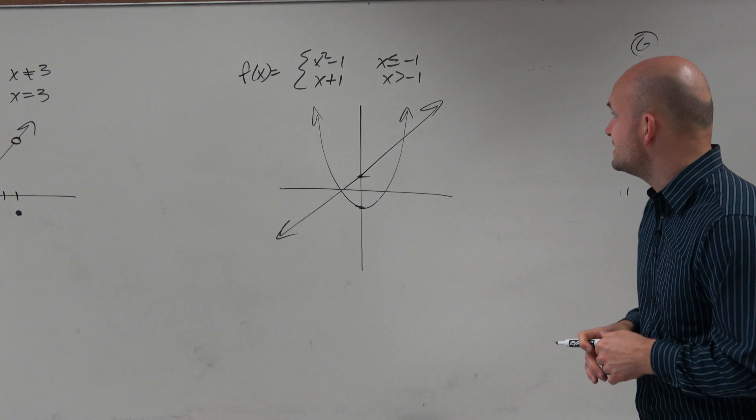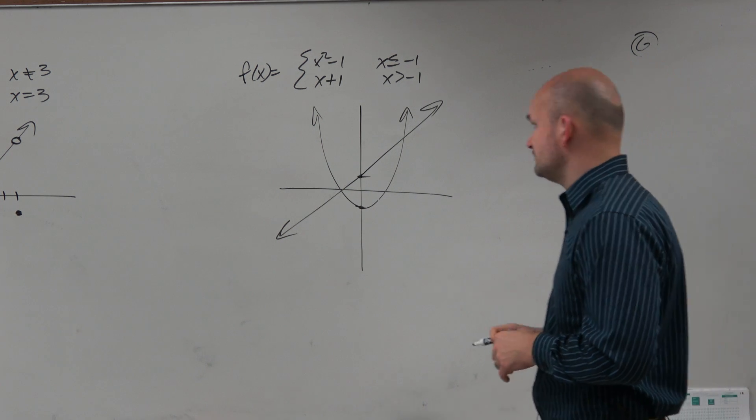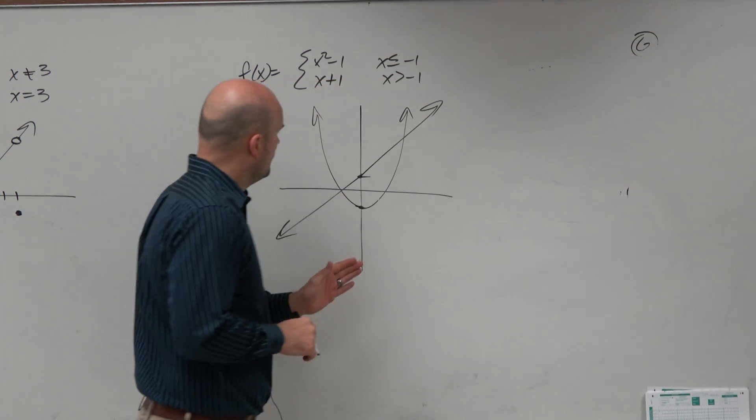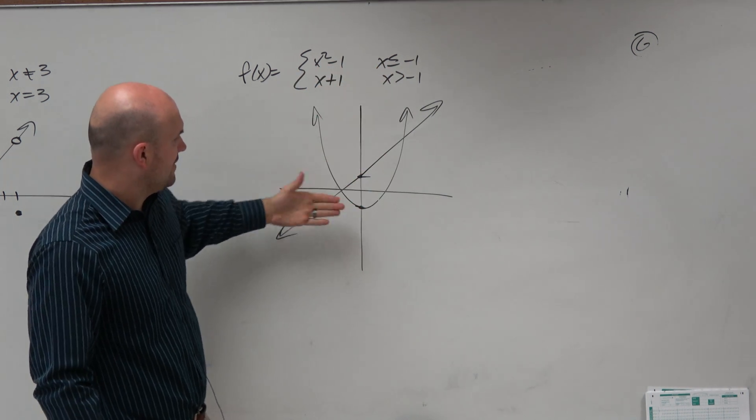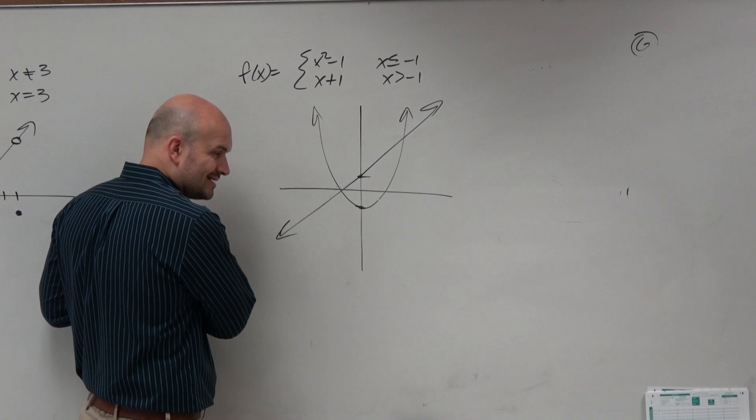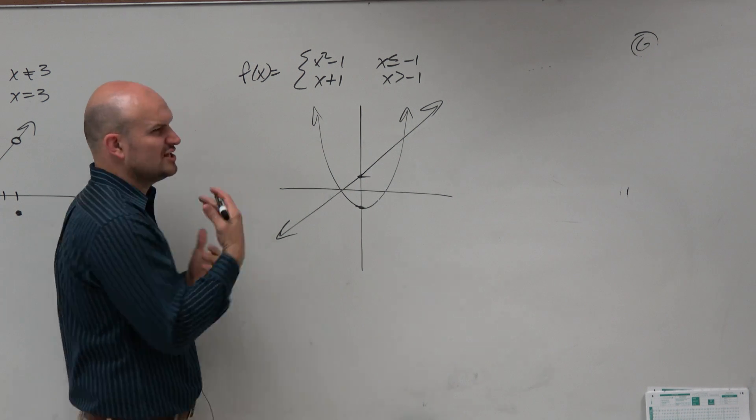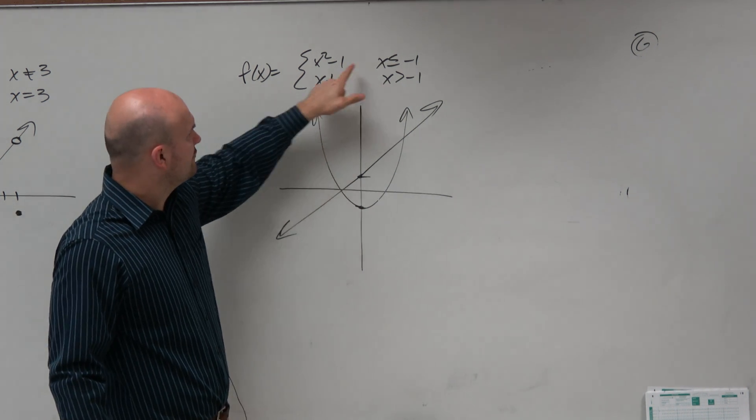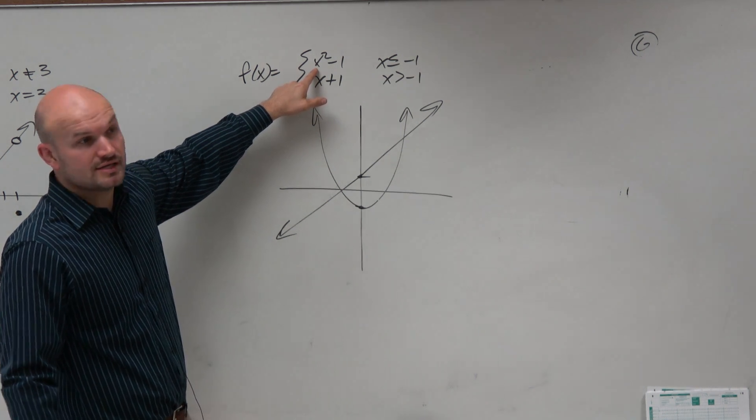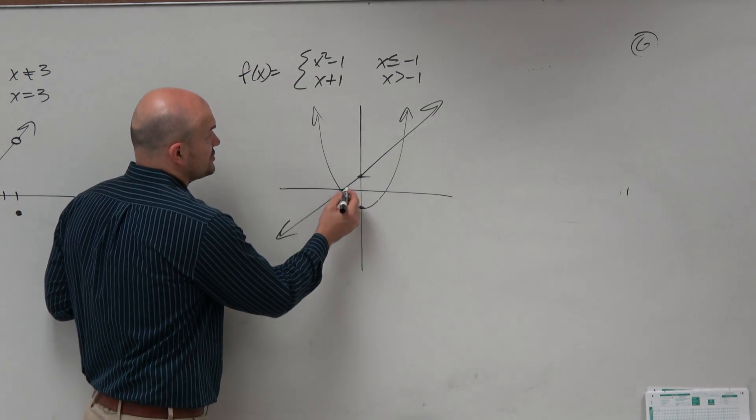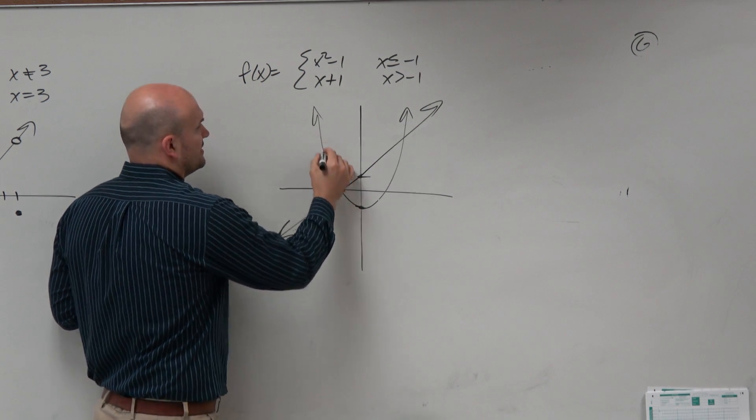So the restrictions are at negative 1. So at negative 1, this function is true. Now, I'm not sure if I graph this correctly or the best ability, but let's check out what should negative 1 be for this function. So negative 1 squared is 1. 1 minus 1 is 0, right? So this function is true right there.